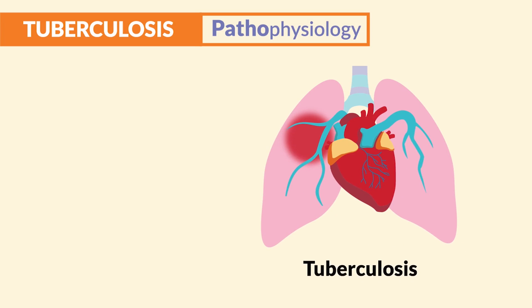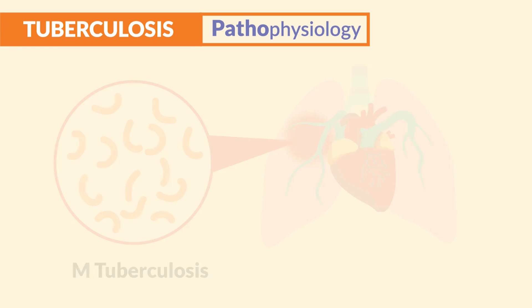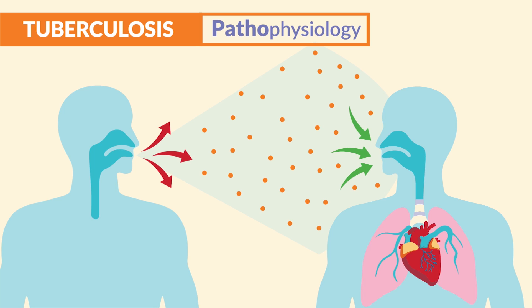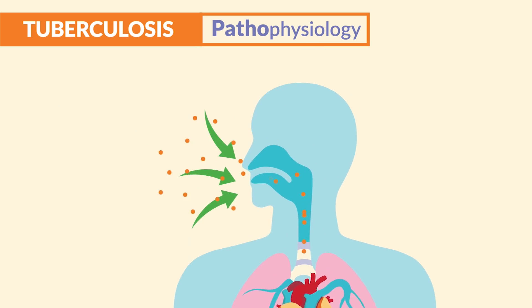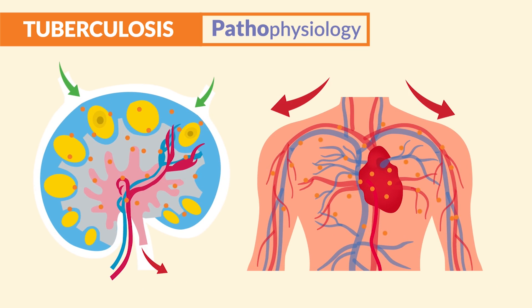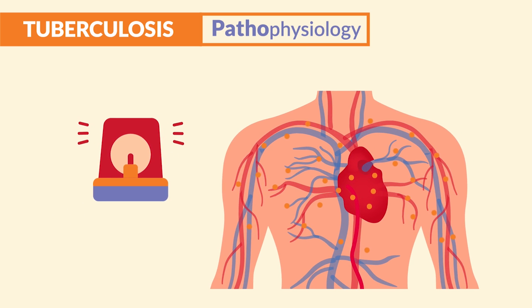For tuberculosis, it's a bacterial infection in the lungs caused by bacteria called M. tuberculosis. It's spread via the airborne route, so once inhaled it spreads to the lymph and bloodstream. Naturally, this alerts the police of the body.